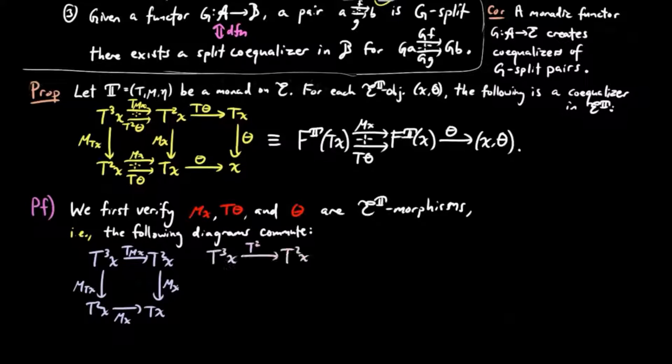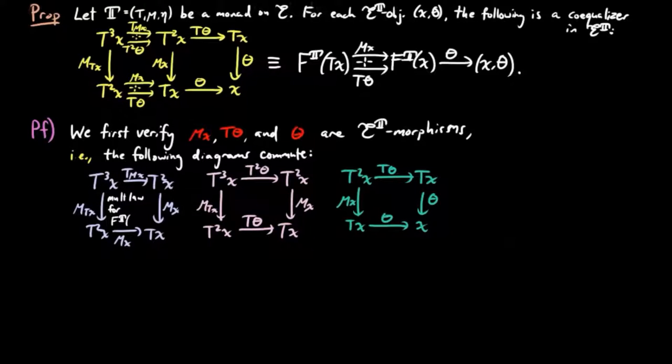We see that the left diagram commutes by the multiplication law for the free Eilenberg-Moore object on X, the middle square commutes by naturality of mu, and the right square commutes by the multiplicative law for the Eilenberg-Moore object X theta.